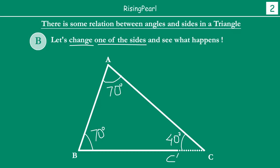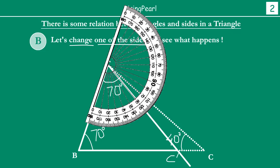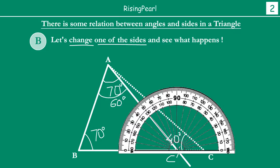So now let us see how reducing side BC affects the rest of the angles. If you measure here now, the new angle A is 60 degrees — 50, 60, 70. So the new angle A is 60 degrees. And similarly, if you take a look at point C', the angle there is now 50 degrees. Initially it was 40, but now it has become 50 degrees.